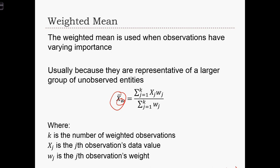So this is the weighted mean. The numerator of this equation is the sum of xj times wj. That's the sum of the observed data values times the weight of each data value. And on the bottom, we have the sum of all the weights.